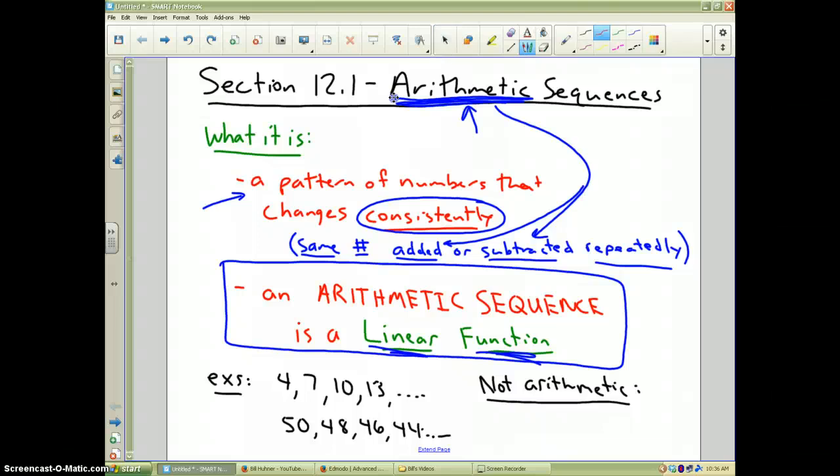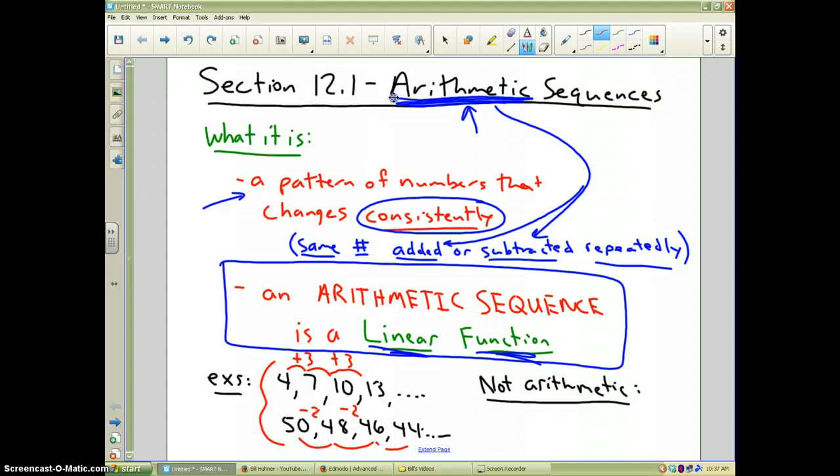Some examples of arithmetic sequences: 4, 7, 10, 13. Why is that arithmetic? Because the common difference is 3. 50, 48, 46, 44 is also arithmetic because the common difference is negative 2. The numbers change consistently.